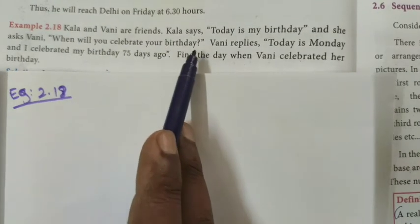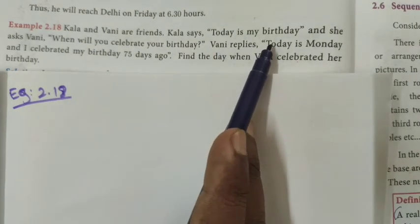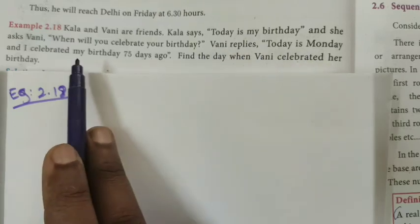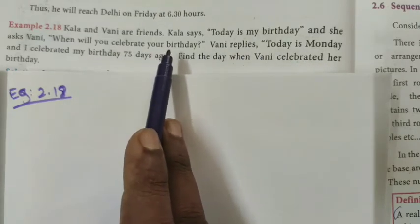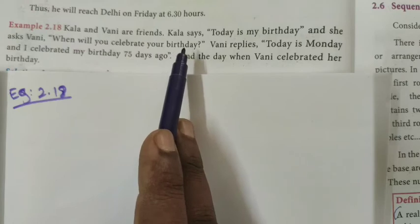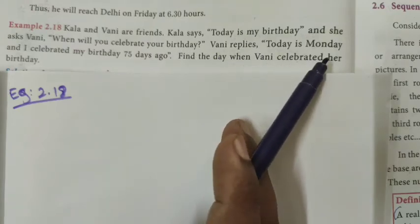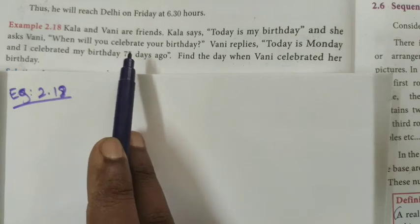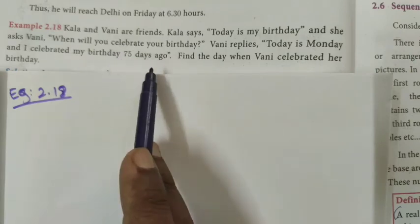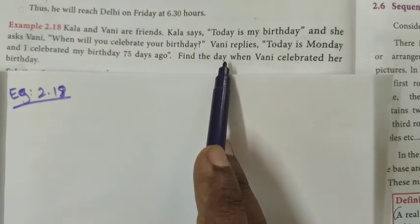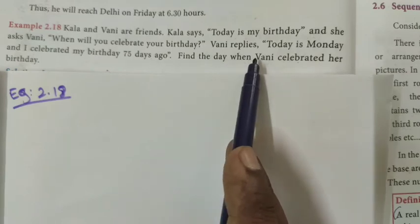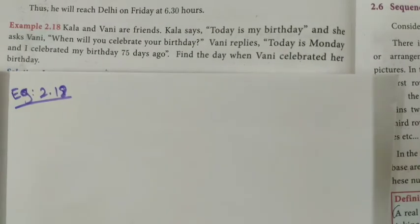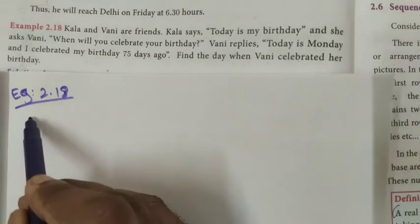Example sum 2.18. Kala and Vani are friends. Kala says today is my birthday, and she asks Vani when she will celebrate her birthday. Vani replies: today is Monday, and I celebrated my birthday 75 days ago. We have to find the day when Vani celebrated her birthday.